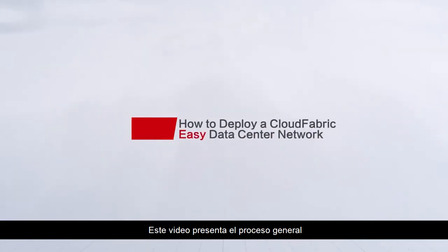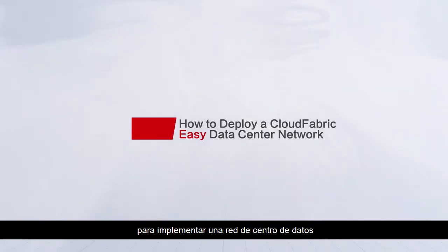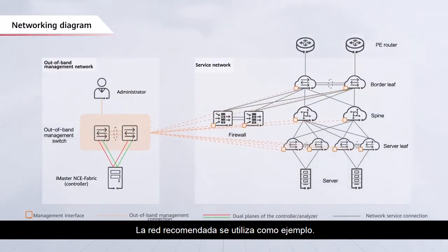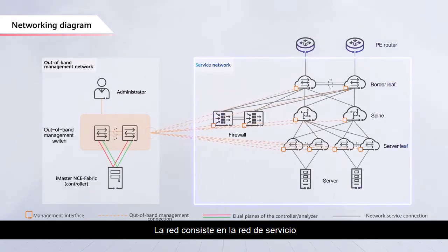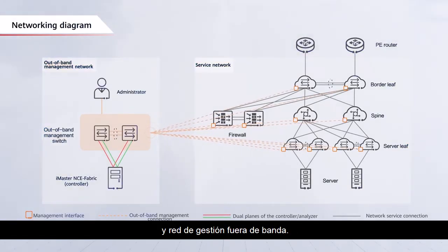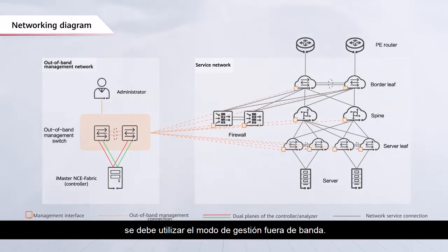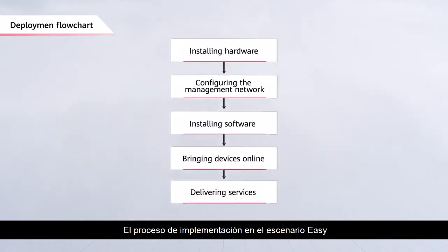Hello everyone. This video introduces the overall process and key operations for deploying a data center network in the CloudFabric easy scenario. The recommended networking is used as an example. The networking consists of the service network and out-of-band management network. In the easy scenario, the out-of-band management mode must be used. The deployment process consists of several key phases that will be introduced in this video.